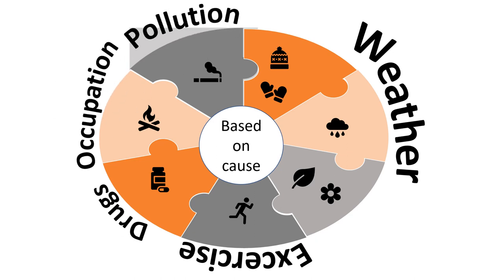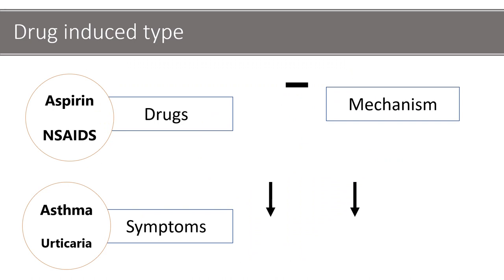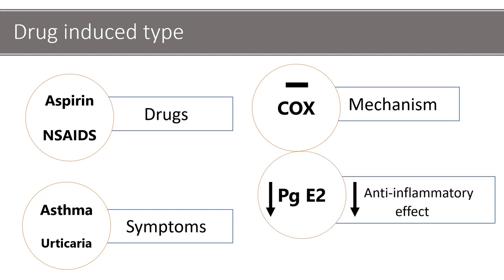Next we will elaborate on drug-induced asthma and occupational asthma. Coming to drug-induced asthma, the causative agents are aspirin or other non-steroidal anti-inflammatory drugs. The mechanism by which these drugs cause asthma is they inhibit the cyclooxygenase pathway, which leads to decrease in prostaglandin E2, which actually promotes the enzymes that cause anti-inflammatory effect. It causes asthma as well as urticaria.